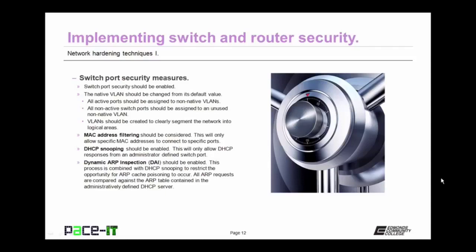In addition to DHCP snooping, dynamic ARP inspection, or DAI, should also be enabled. This process is combined with DHCP snooping to restrict the opportunity for ARP cache poisoning to occur. All address resolution protocol requests are compared against the ARP table contained in the administratively defined DHCP server. Implementing these measures will greatly increase the security of your switches.